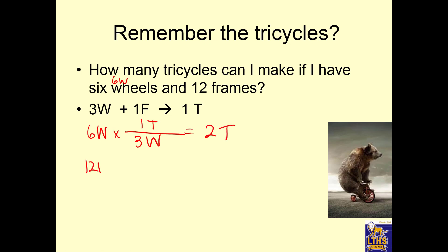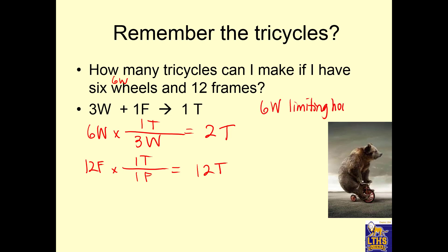If I have 12 frames, it takes one frame for every one tricycle, so I'm going to be able to make 12 tricycles. But wait — I'll never get to 12 tricycles. Why not? Because my wheels will run out after I make two tricycles. This tells us that the six wheels limit how many tricycles we can get. So wheels in this problem are what we call a limiting reactant. The limiting reactant tells us how much product we can get.